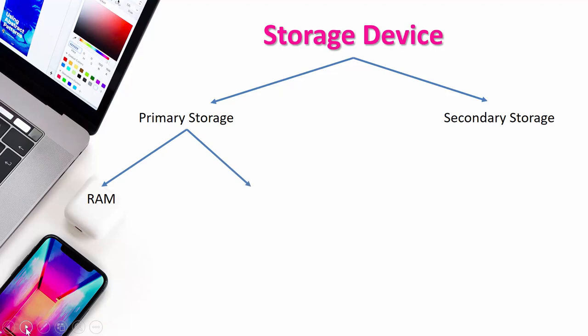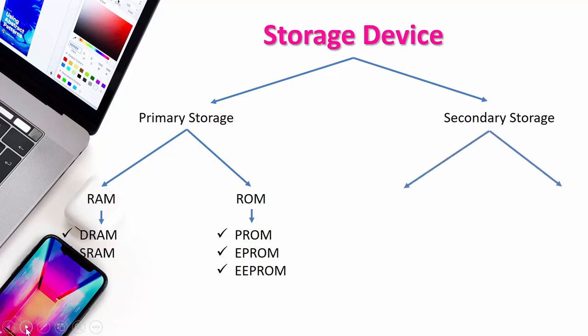Primary storage can be divided into two types: first is RAM and second is ROM. RAM can be divided into two types: DRAM (Dynamic RAM) and SRAM (Static RAM). ROM can be divided into three types: PROM (Programmable ROM), EPROM (Erasable Programmable ROM), and EEPROM (Extended Erasable Programmable ROM). RAM stands for Random Access Memory and ROM stands for Read Only Memory. Secondary storage includes hard disk, compact disk, and pen drive.